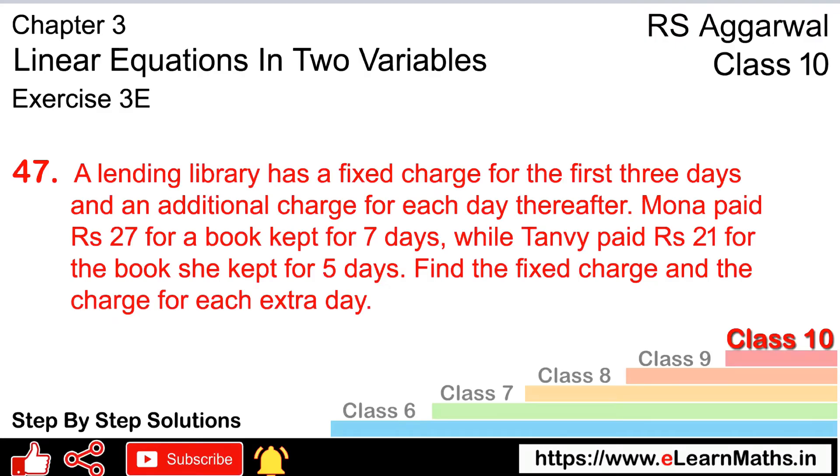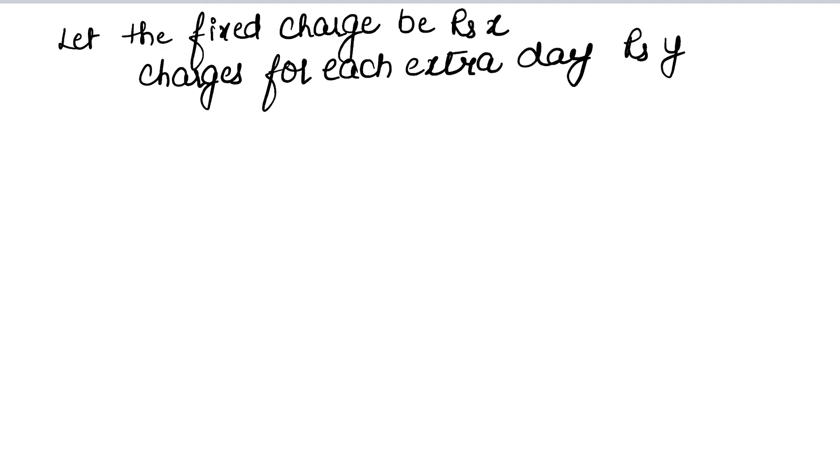Now let's proceed step by step. First, what's happening? Fixed charges are for the first three days and after that additional charges apply. Mona paid 27 if she kept the book for 7 days. So how will our equation form?